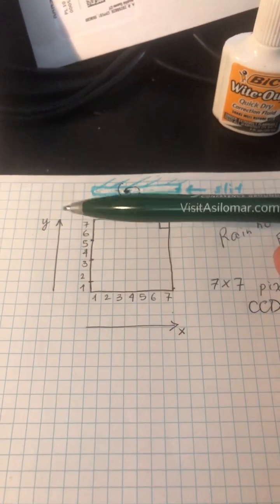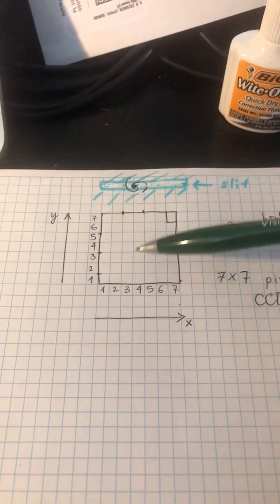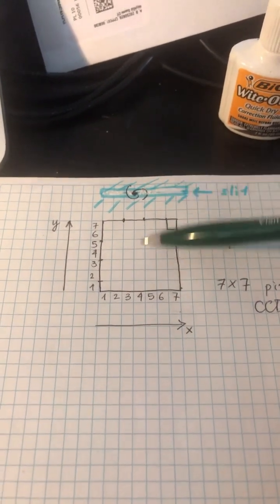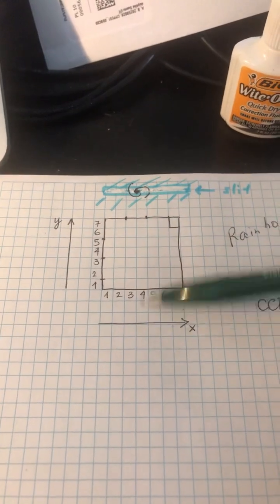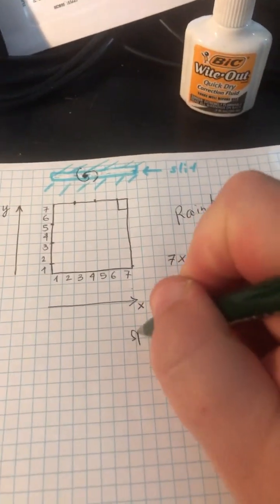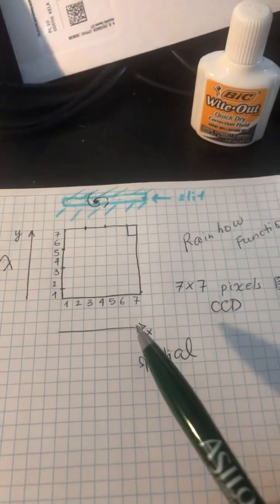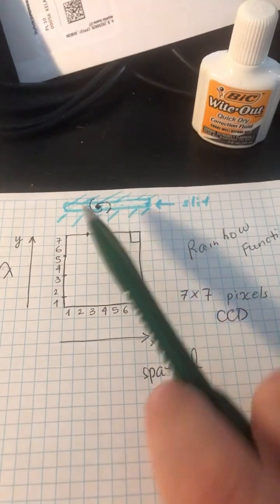In the Y direction for the wavelengths, the light disperses into different wavelengths across the Y or vertical direction. But the X is my spatial direction. Here I'll write lambda for wavelengths because it's an extended object, so I get a signature, not just one line.